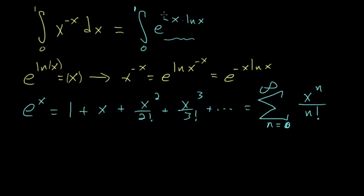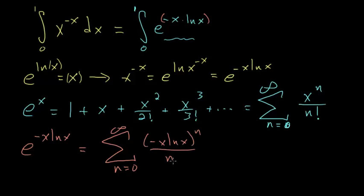And if we substitute this value here for x in this Taylor series, we have e to the minus x times the natural log of x is equal to the sum from n equals 0 to infinity of minus x times the natural log of x to the nth power over n factorial,